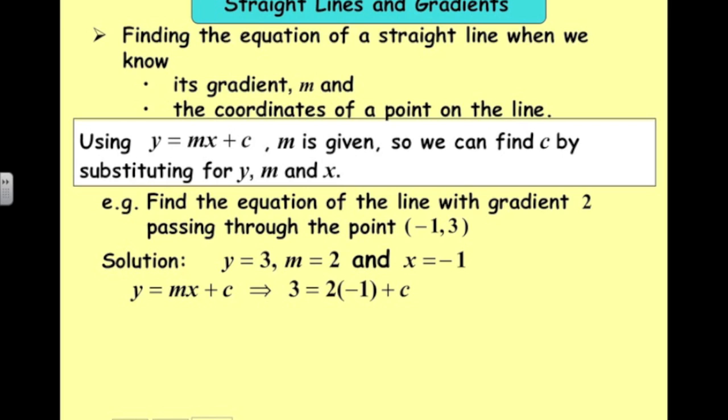So I know the equation of the line is y equals mx plus c, so I just substitute everything that I know. I know that m, the gradient, is 2, and I know the coordinates of a point on the line are minus 1 and 3. You've just got to get those in the right order. The minus 1 here with the x, and the 3 here with the y.